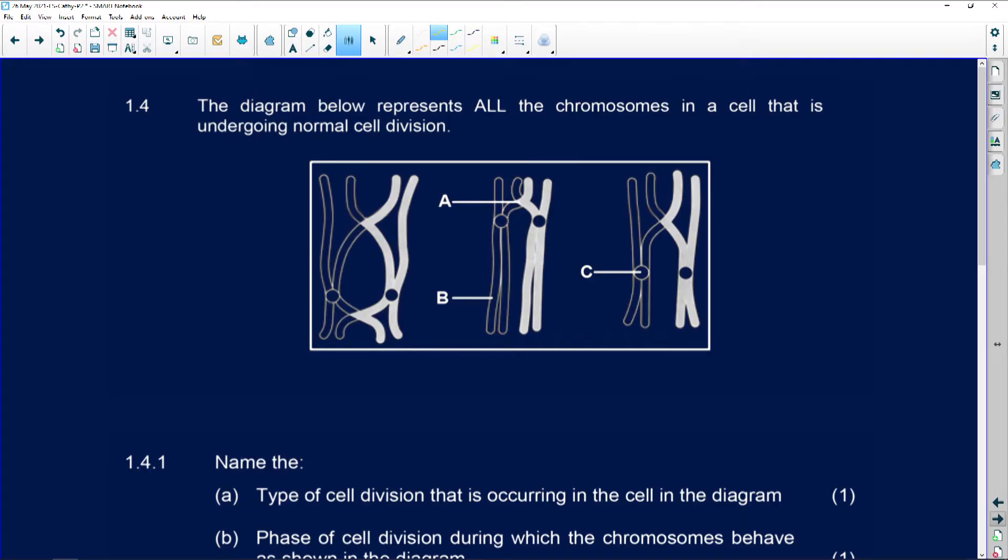Question 1.4. The diagram below represents all the chromosomes in a cell that is undergoing normal cell division. So now we know cell division. We see this, which is crossing over, and we immediately know that it is meiosis.